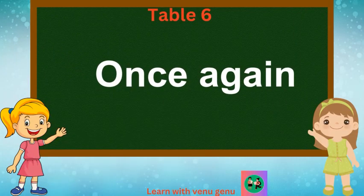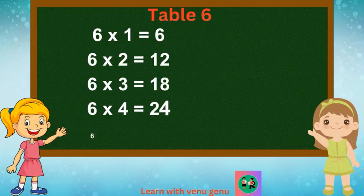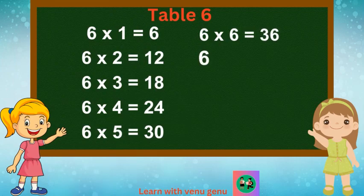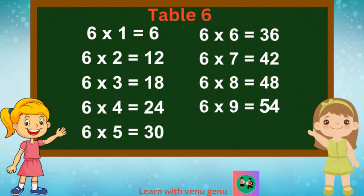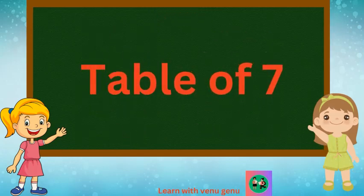Once again: 6 1s are 6, 6 2s are 12, 6 3s are 18, 6 4s are 24, 6 5s are 30. 6 6s are 36, 6 7s are 42, 6 8s are 48, 6 9s are 54, 6 10s are 60.